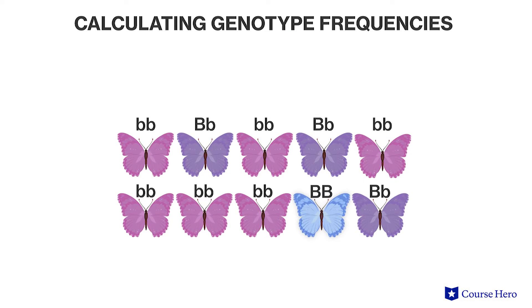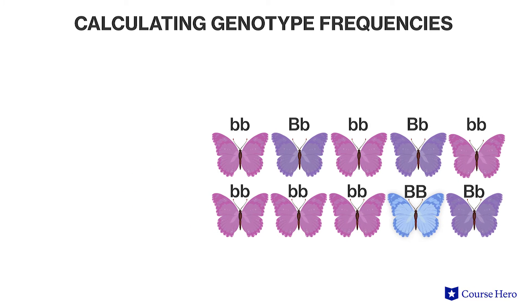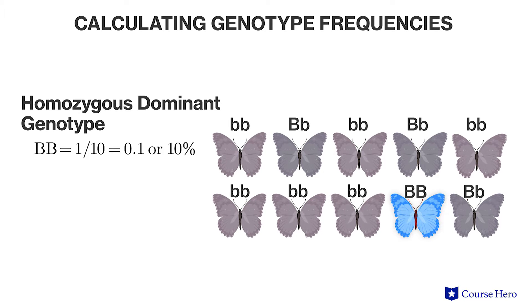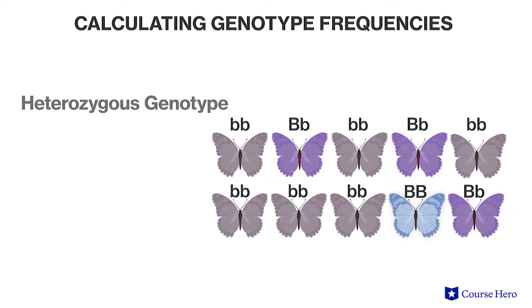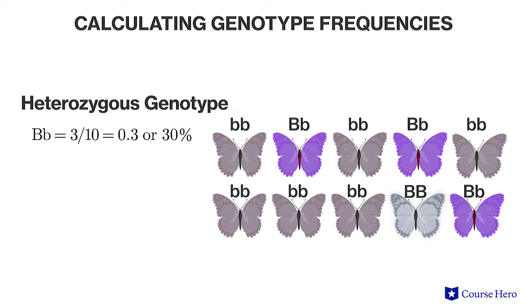In this example, the genotype frequencies are: for the homozygous dominant genotype, 1 divided by 10, which is equal to 0.1, or 10%. For the homozygous recessive genotype, 6 divided by 10, which is equal to 0.6, or 60%.